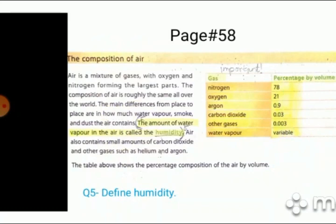Now come to page number 58 and write down question define humidity. Here you can see the answer highlighted here. Now mark this chart as important in which percentage of gases by volume is shown. Percentage by volume. Highlight it and mark it as important.